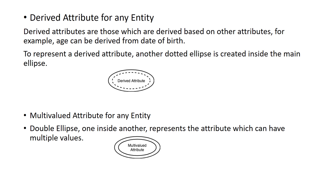Next, there are different types of attributes: Simple, Composite, Derived Attribute, Multivalued, and Single Valued. A Derived Attribute is one that can be derived from another attribute — for example, age can be derived from date of birth. The derived attribute is shown with a dashed ellipse.